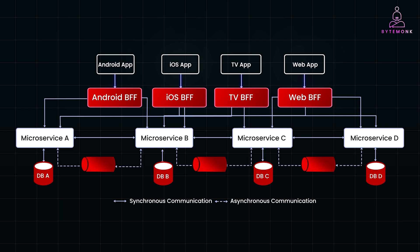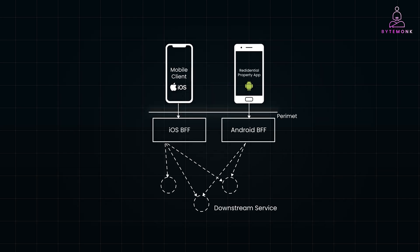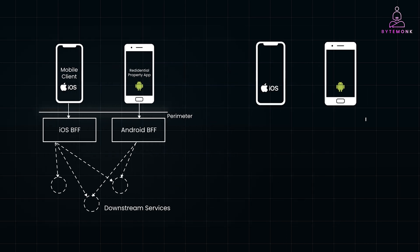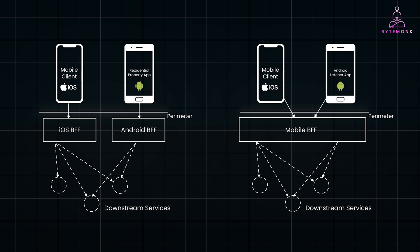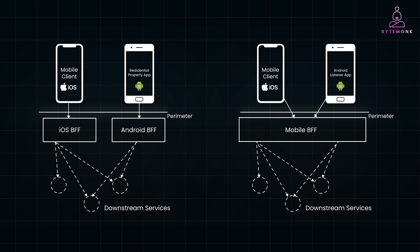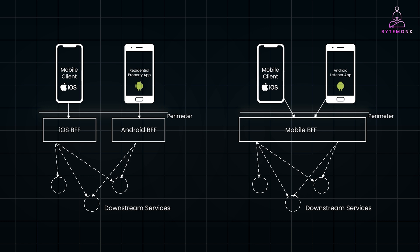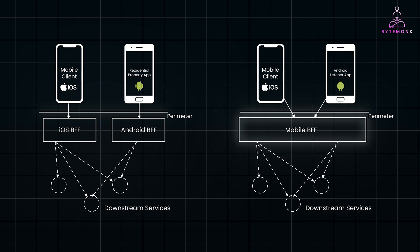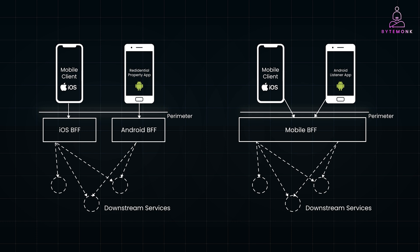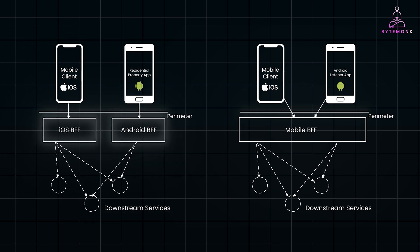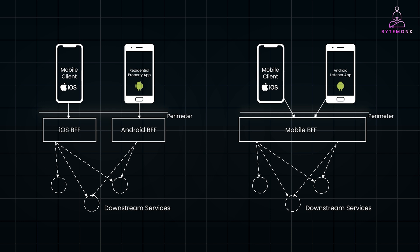When delivering a consistent user experience across different platforms, two common approaches are observed. One approach is to have a dedicated BFF for each type of client, ensuring that each platform — such as different mobile operating systems — has its own tailored BFF. Another approach is to use a single BFF for multiple user interfaces, such as both Android and iOS versions of a mobile application sharing the same BFF. While this can simplify development, it carries the risk of the BFF becoming overloaded with multiple responsibilities as more clients are added. In cases where the same team manages both versions of the application and the BFF, a shared BFF model can work effectively. However, when different teams are responsible for the applications, having separate BFFs is often the preferred strategy. Ultimately, the structure of the organization plays a significant role in determining which approach is more suitable.